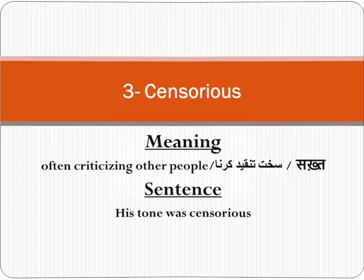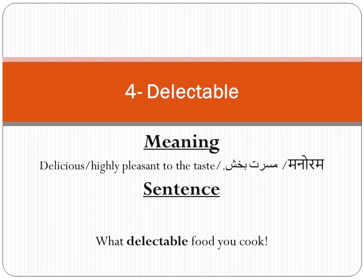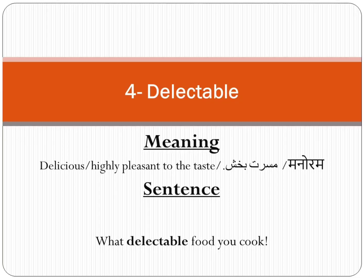Fourth one is Delectable. Meaning in English: delicious, highly pleasant to the taste. In Urdu meaning: musarrat bakhsh. Sentence: What a delectable food you cook! Tumne kitna lazat bakhsh ya musarrat bakhsh khana banaya hai.